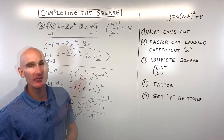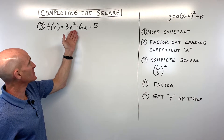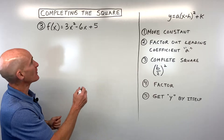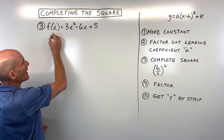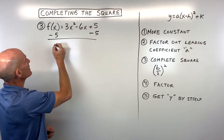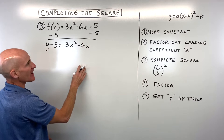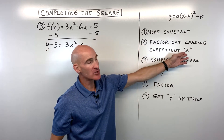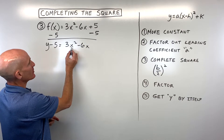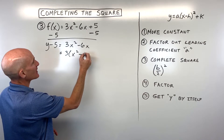Let's take a look at another example. We've got f(x) equals three x squared minus six x plus five — how would you write that in vertex form? Following the steps: treat f(x) as y and subtract five to move the constant out of the way, giving y minus five equals three x squared minus six x. Now factor out the leading coefficient — we want to factor out just the three, not the greatest common factor three x. That gives us three times x squared minus two x.